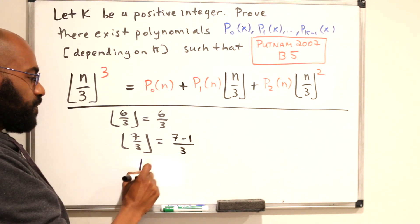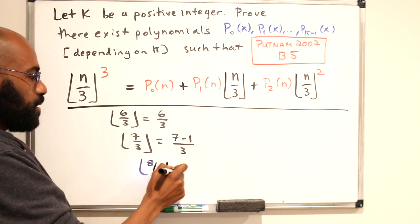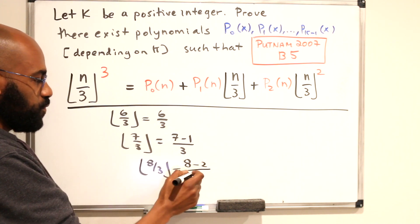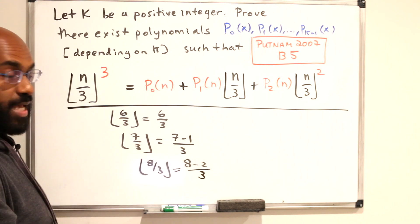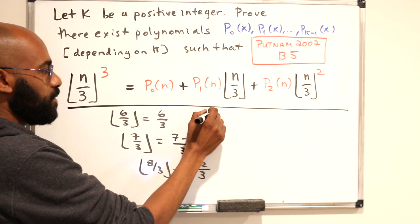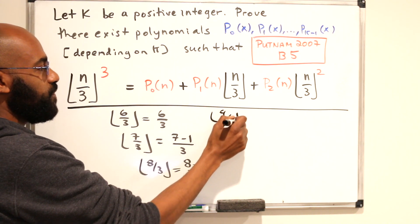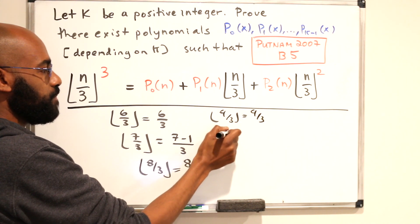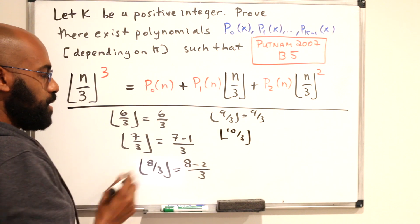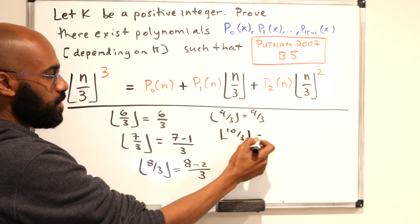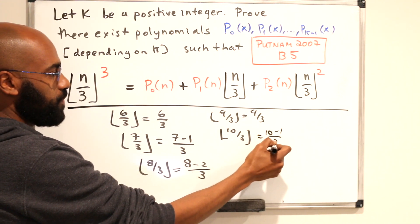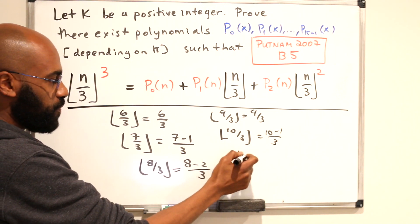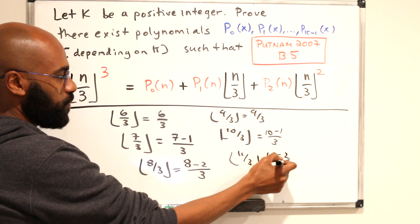Okay, and the floor of 8 over 3 is also close to 6 over 3 which you can represent as 8 minus 2 over 3. Okay, now the floor of 9 over 3 is itself and the floor of 10 over 3 is going to be 9 over 3 which is 10 minus 1 over 3. So we kind of see a pattern here, right? The floor of 11 over 3 is going to be 11 minus 2 over 3.